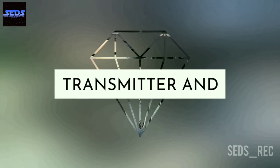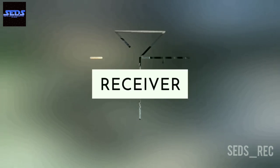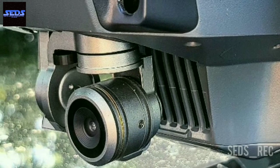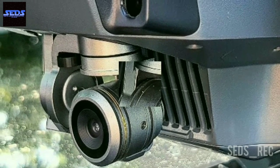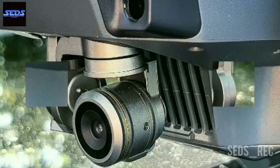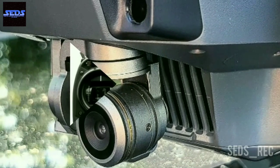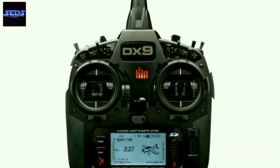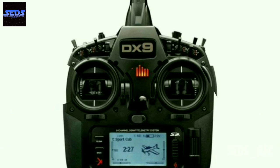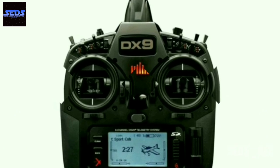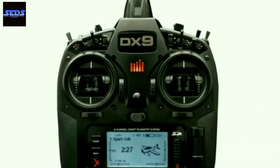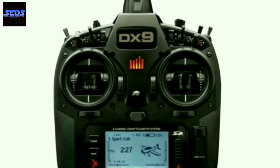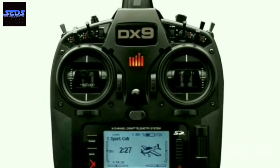Number seven, radio transmitter and receiver. The transmission and reception of signals are done with radio frequency. The minimum number of channels needed to control the drone is four, and this can be increased according to our requirement.